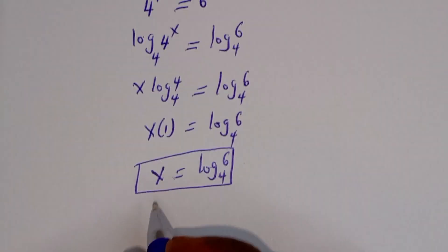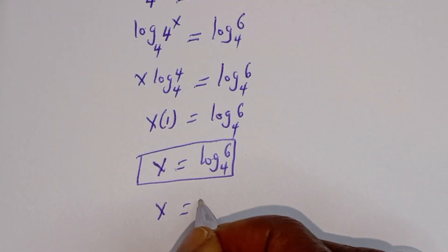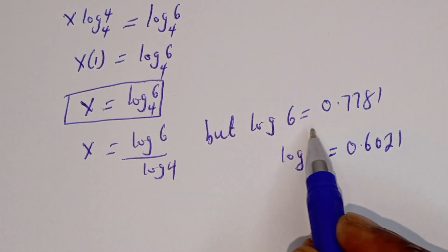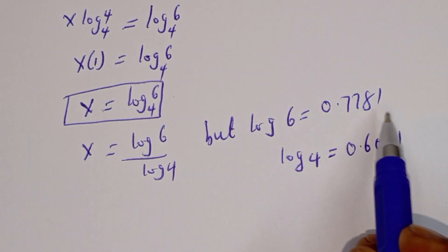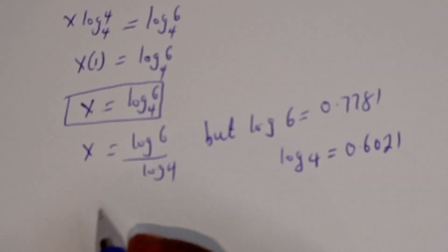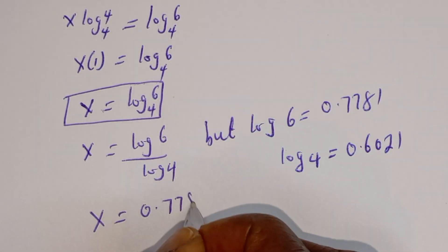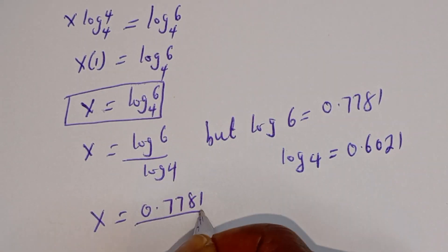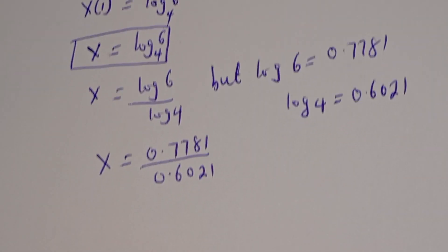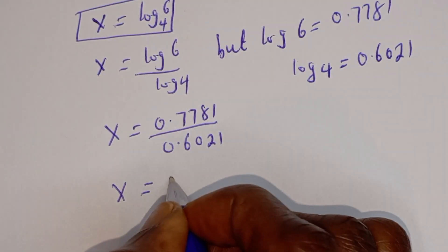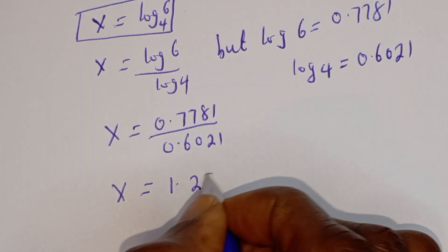If you press your calculator, s is equal to log 6 over log 4. But log 6 is equal to 0.7781 and log 4 is equal to 0.6021. Then s is equal to 0.7781 over 0.6021. s is equal to, if we divide this by this, we have 1.292.